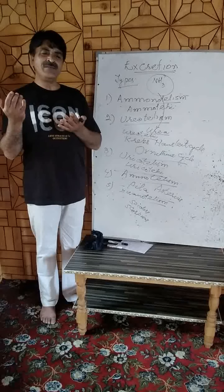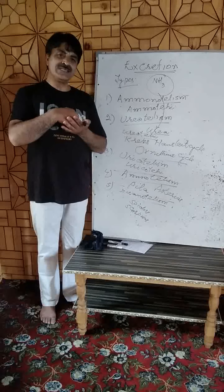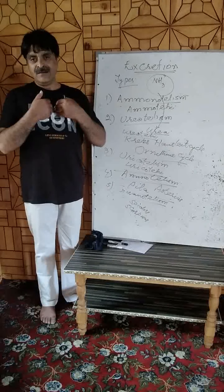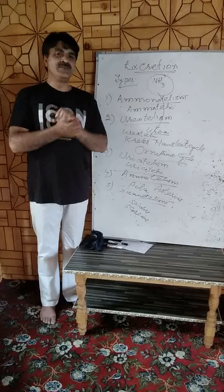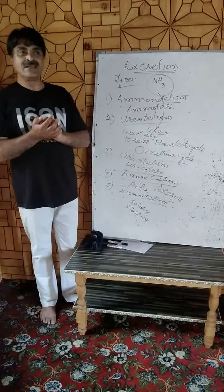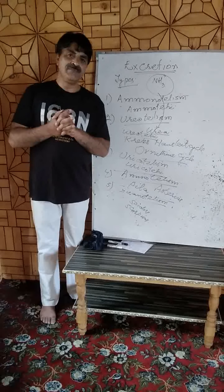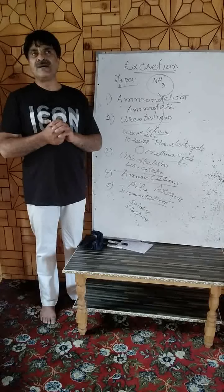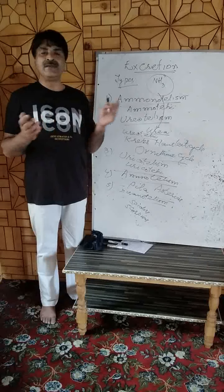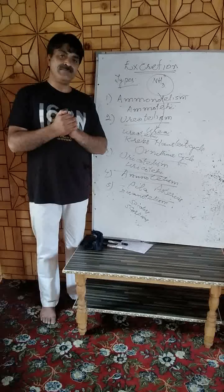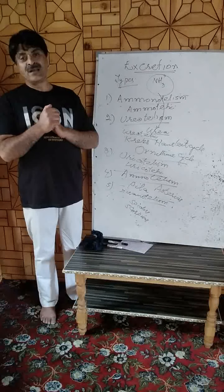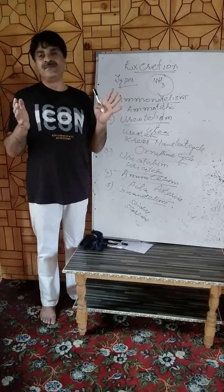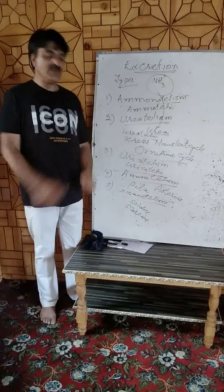Proteins can come from exogenous sources such as food, or from endogenous sources like excess proteins of the body. Purines and pyrimidines are present in abundance in beverages like tea, coffee, and cola. Consuming these in excess leads to increased uric acid production, especially in the urine.